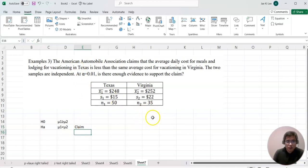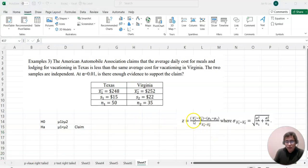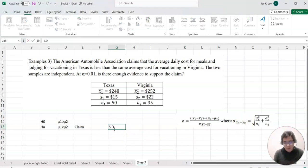Now we continue using the same formula: z equals (x̄1 minus x̄2 minus (μ1 minus μ2)) over σ(x̄1 minus x̄2). In this scenario, we always assume μ1 equals μ2, so the difference becomes zero. It's meaningless here.